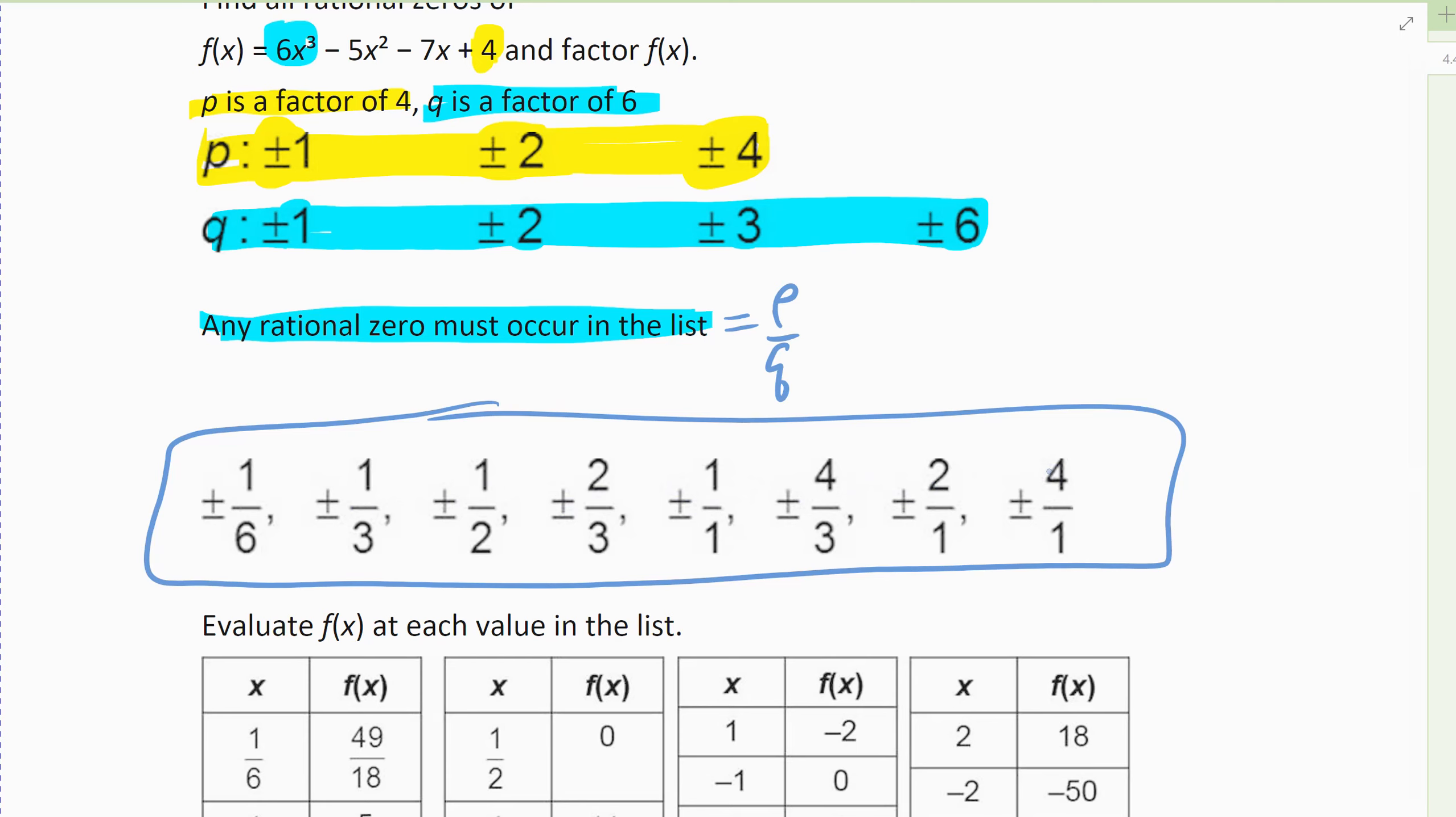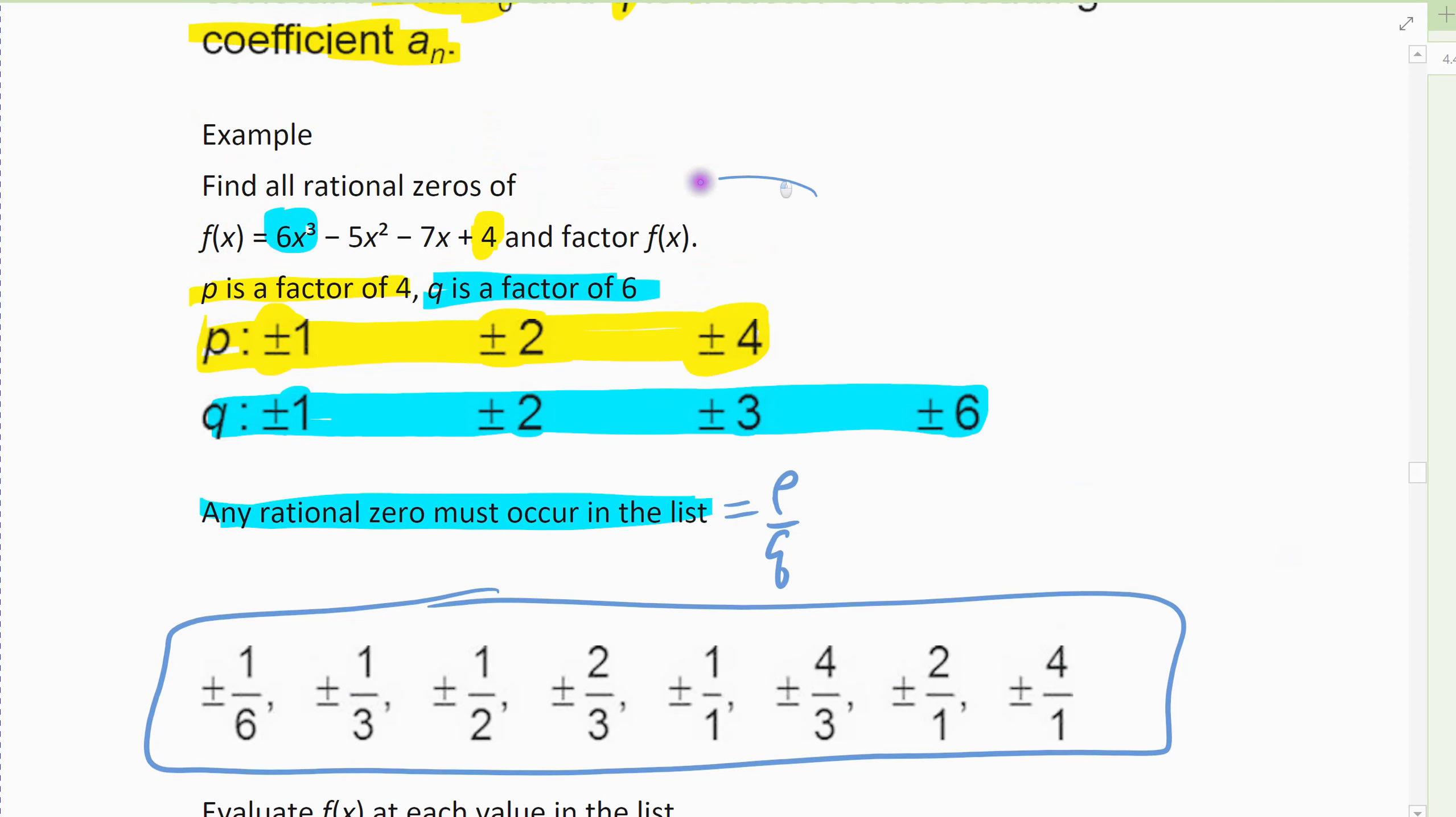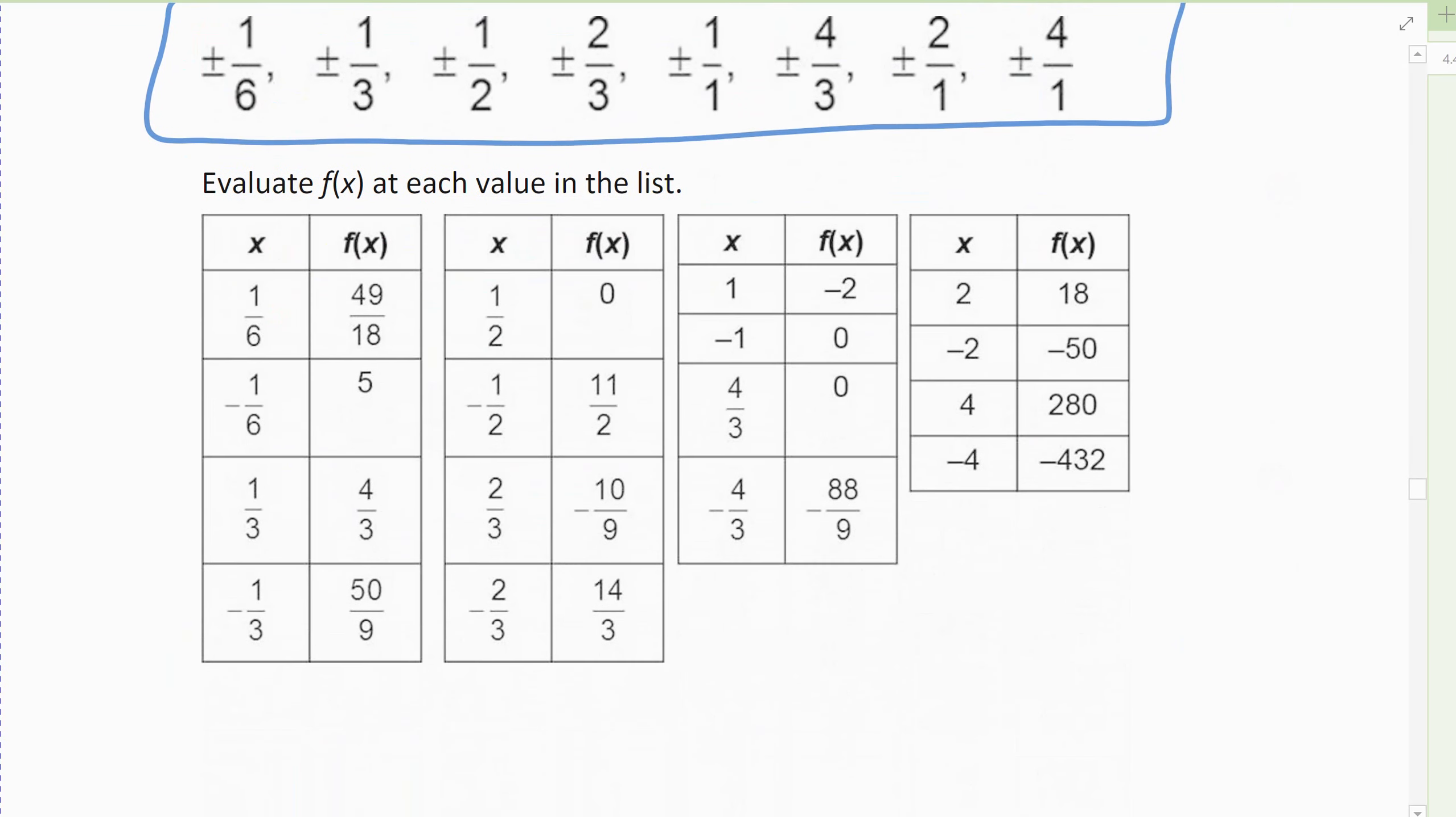And then what you do is, well, in order to be a zero, when I plug it into my function f(x), when I plug these in, in order to be a zero, I need to have 0 coming up. And so that's what we do. And I gave you all of them. Now usually you stop once you find your zeros. But in the table here, I've listed all of them. And so that's literally what we've done, is we've taken every single one of these possible zeros, plugged it into our original function and see what we get. And so what we're looking for is our zeros.